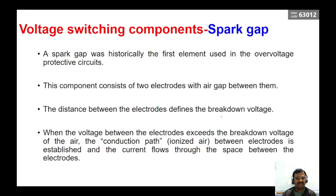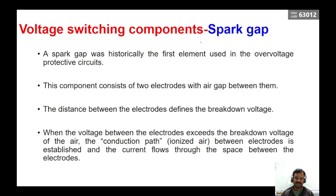Now let us understand how this device is going to function. In detail, I am going to talk about the spark gap and also discuss the gas discharge tube. It is very simple to understand the spark gap mechanism. When you have two electrodes placed nearby in an air medium and you apply a high voltage between them, it is going to create an ionization process. Because of this ionization process, an arc starts to be created between these two electrodes.